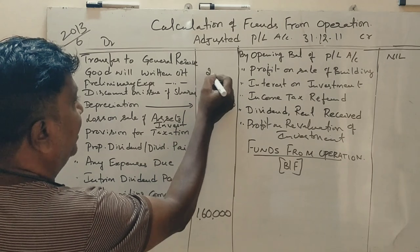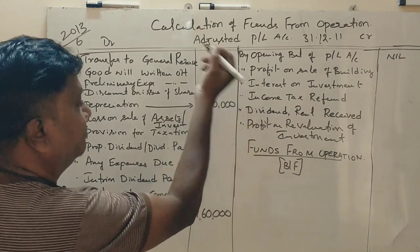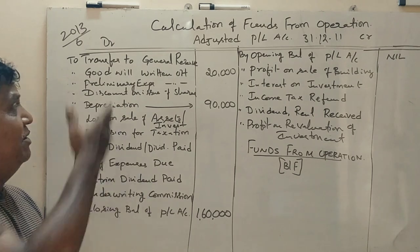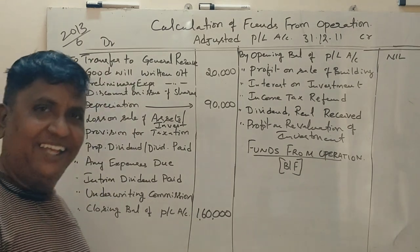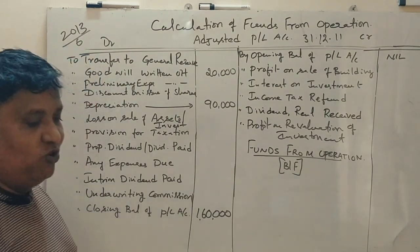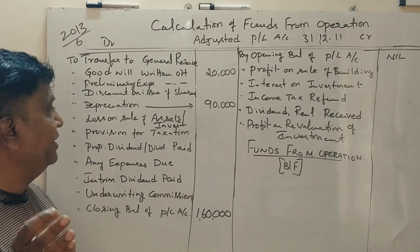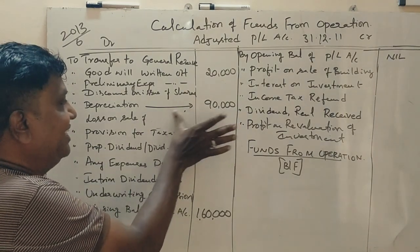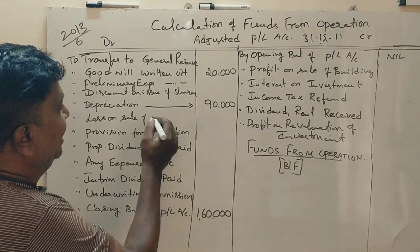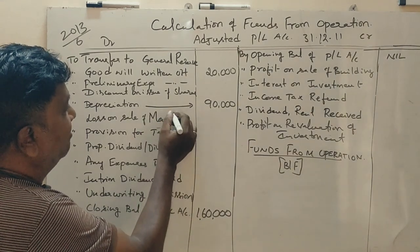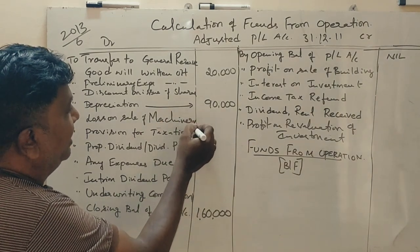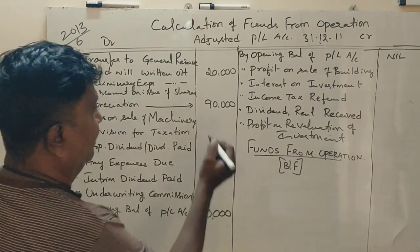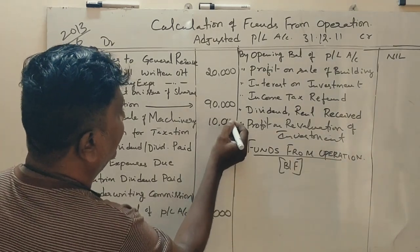This is the end of the year — 30,000 rupees debit. Next, loss on sale of machinery: 10,000 rupees.